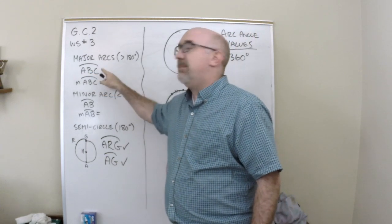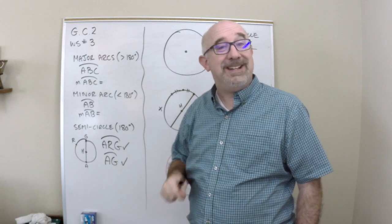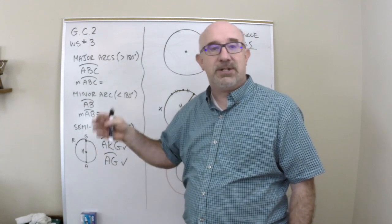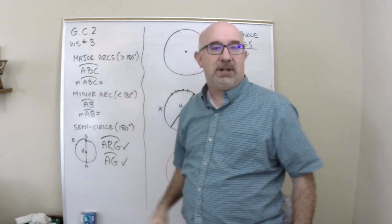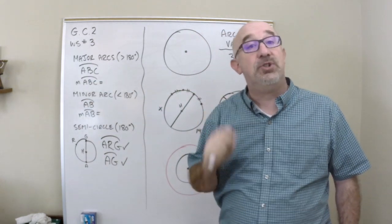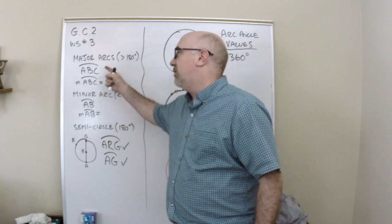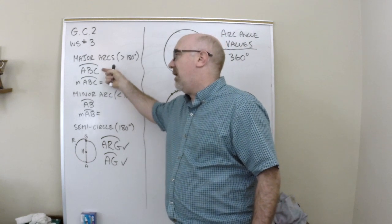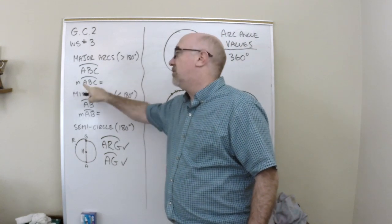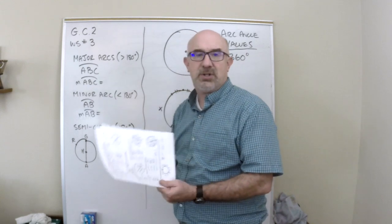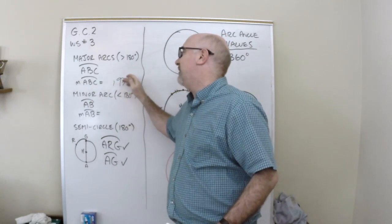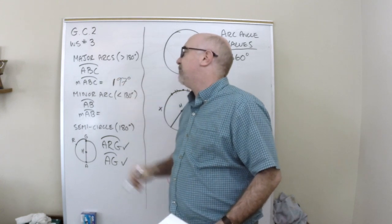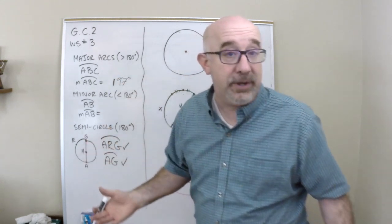And it is always named by three letters to show that it is traveling, the direction it's traveling, and the size that it is. Any three-letter arc is always a major arc. And you can do it just by talking about the object itself, or you can talk about the measurement of that arc. So maybe it's 197 is that arc size, and it has to be greater than 180.